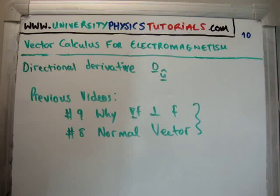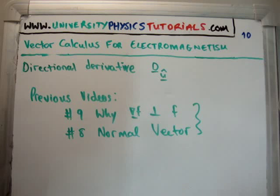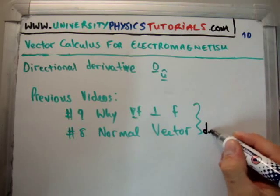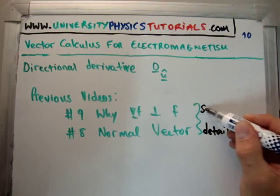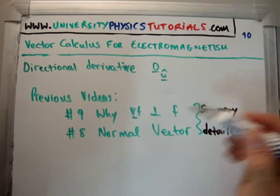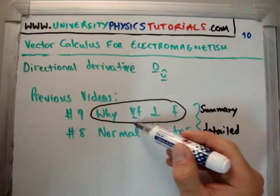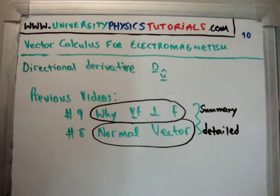I'd like to draw your attention to my website at universityofphysicstutorials.com. The previous videos to this are as follows. In number 9 I discussed why the gradient of a function is perpendicular to that function, and in number 8 I discussed the normal vector. These two videos are essentially the same — one is the detailed video and the other is the summary, covering the same topic for different search terms.